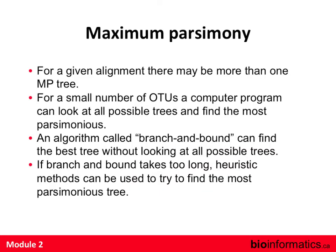For a given alignment there can be more than one equally parsimonious tree. With small numbers of OTUs you can build all possible trees and evaluate them, but as the number of taxa grows, pruning algorithms are needed. A branch-and-bound algorithm trims the neighborhood of possible trees into a smaller neighborhood of optimal trees. This works well for maximum parsimony.